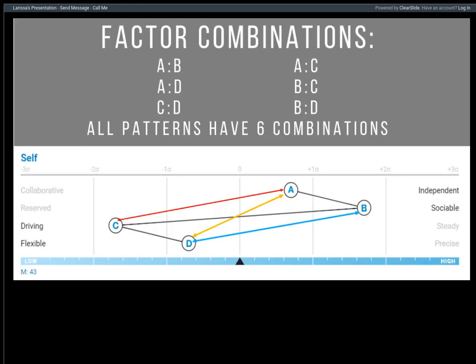For those of you for whom this is fairly new: there are six factor combinations in every pattern. All patterns have all six combinations. Some of them are going to be easier to see. People often stop when they see the black lines drawn and say this pattern has only three factor combinations — but I want you to expand beyond that and understand that every single pattern has all six.